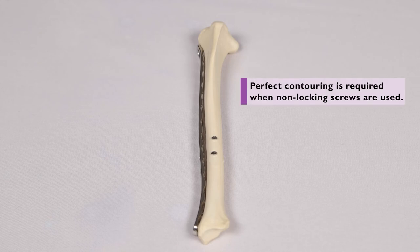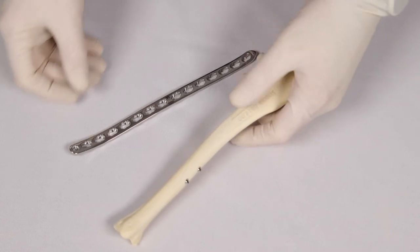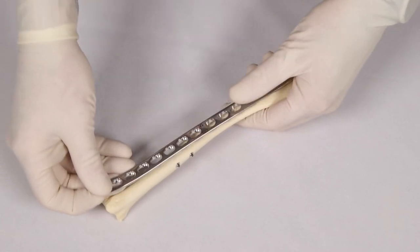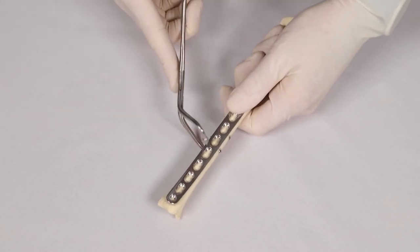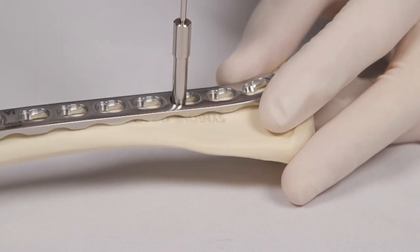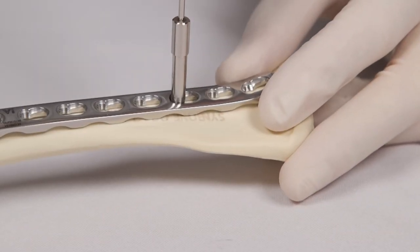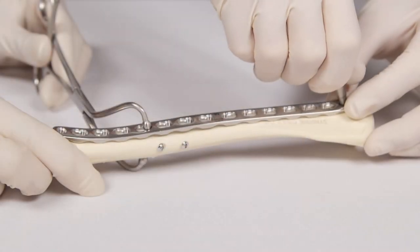However, if the DLP is being placed using non-locking screws, perfect plate contouring is essential. The plate is applied to the bone and positioning and contouring are checked. Temporary fixation of the plate to the bone will be helpful using either plate or bone holding forceps, or a K wire drilled into the bone through a locking wire guide.